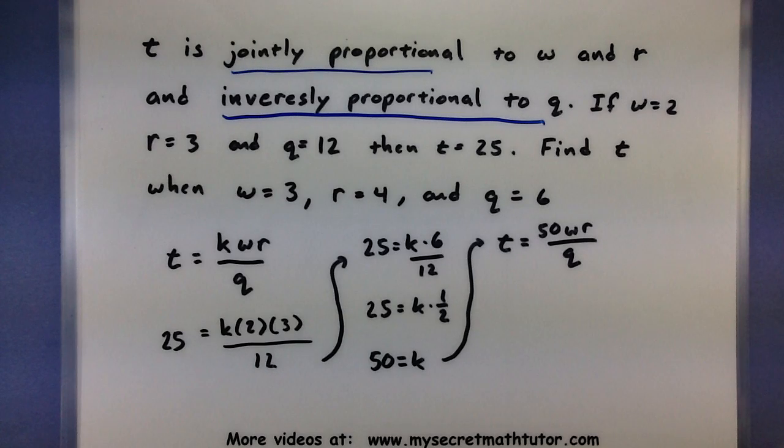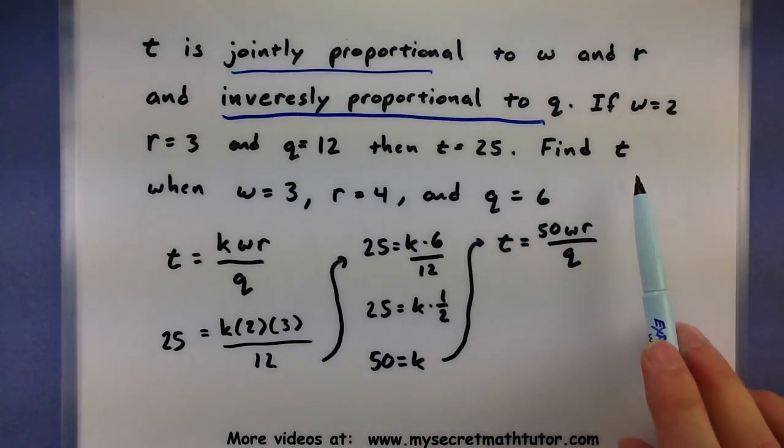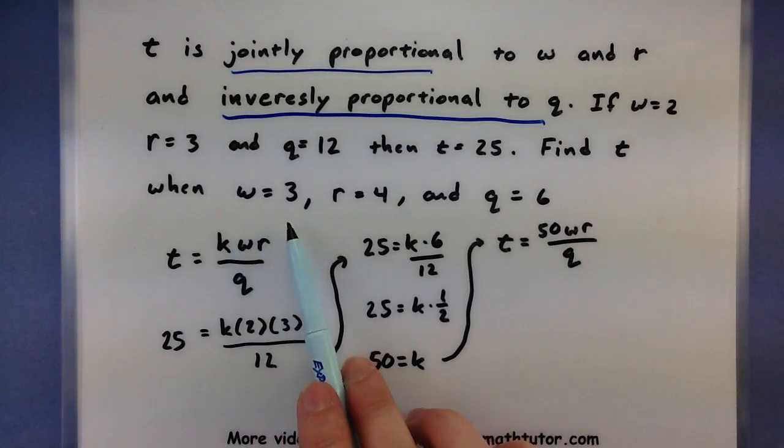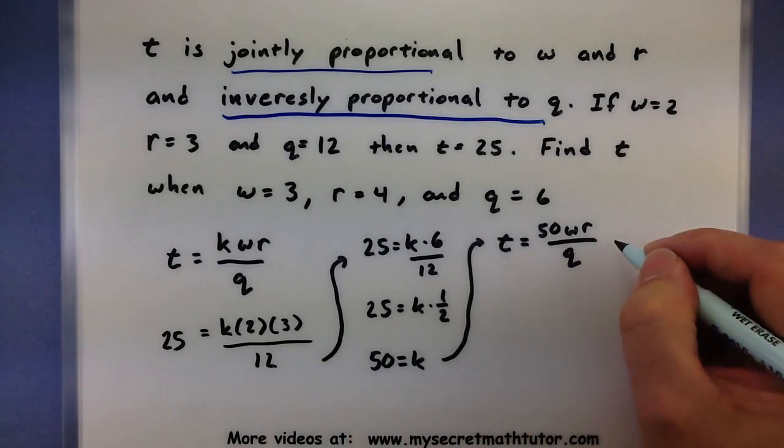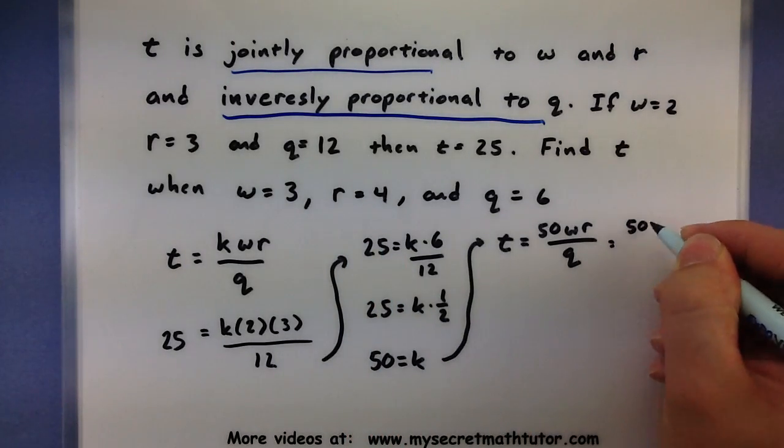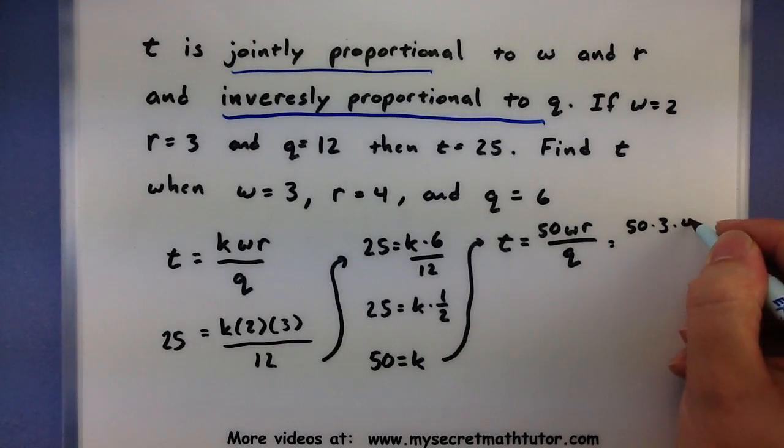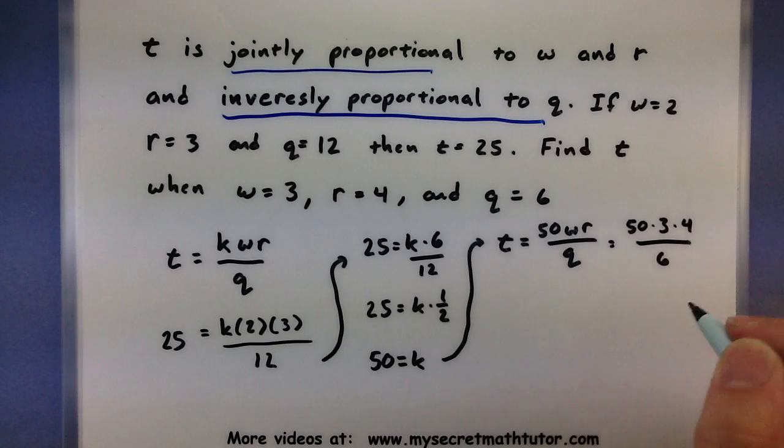So let's go ahead and solve the rest of it now that we know what k is. Find t when w equals 3, r equals 4, and q equals 6. So w equals 3, r equals 4, and q equals 6.